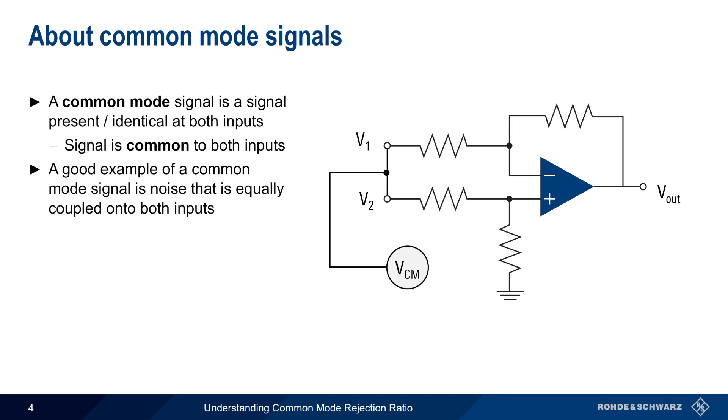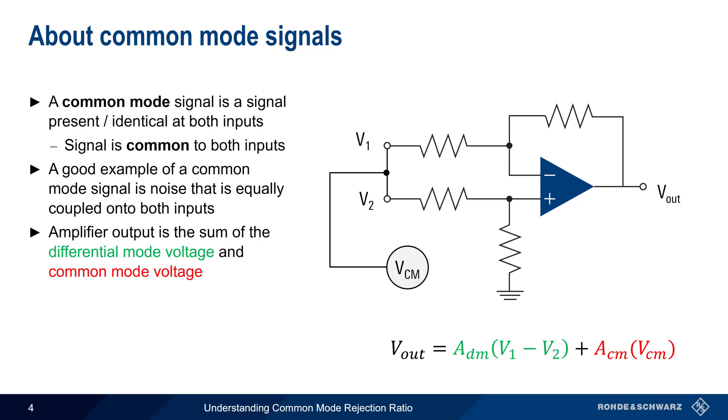A good example of a common mode signal is external noise that's coupled equally onto both inputs. The output of a differential amplifier would then be the sum of both the differential voltage and the common mode voltage, with a differential amount of gain, A, for each type or mode of voltage.